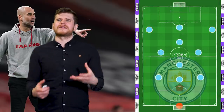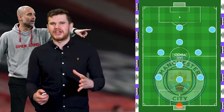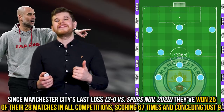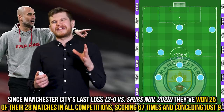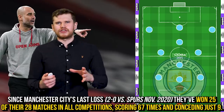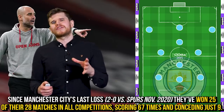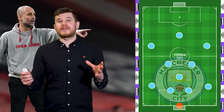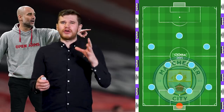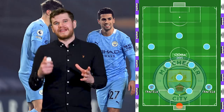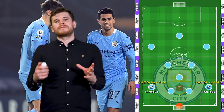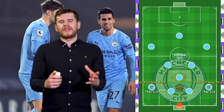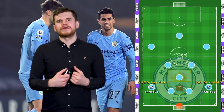This system has allowed Guardiola to dominate matches. In fact, since their last loss, City have won 24 of their 27 games in all competitions, scoring 63 goals and conceding just eight times. And much of this impressive record is down to the work João Cancelo has been doing in the inverted wingback role, providing both defensive coverage, quality on the ball, and energy in midfield.